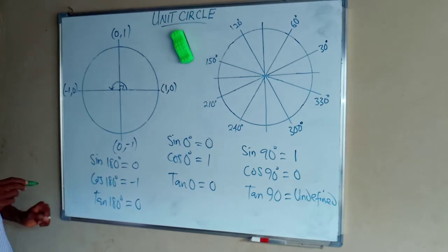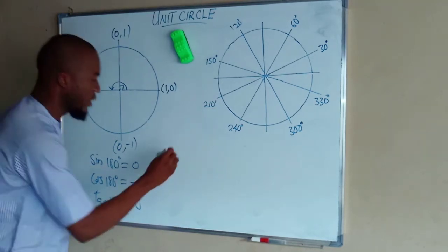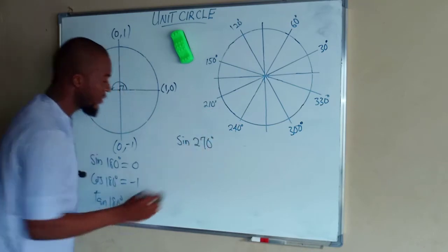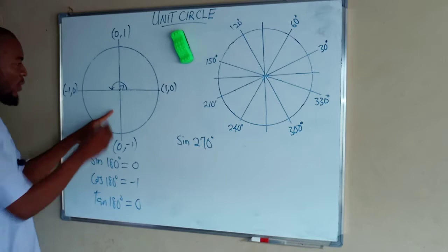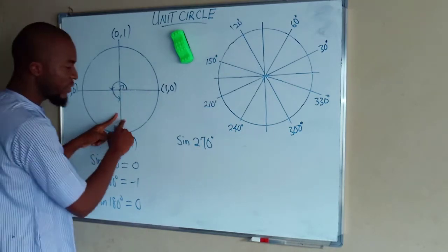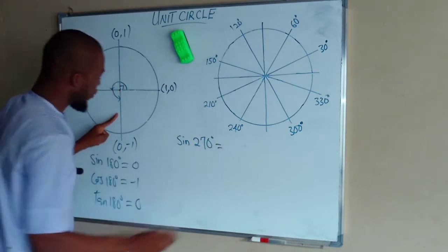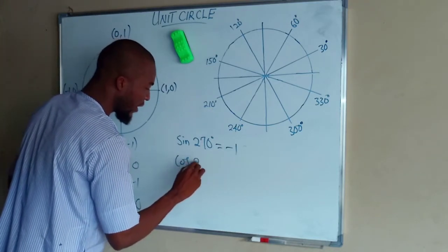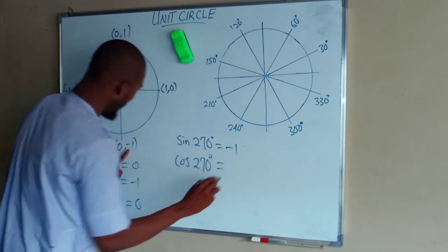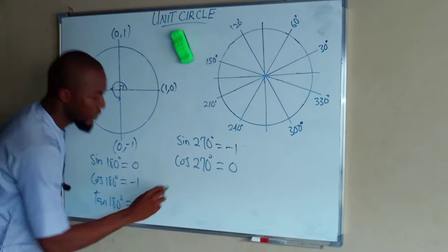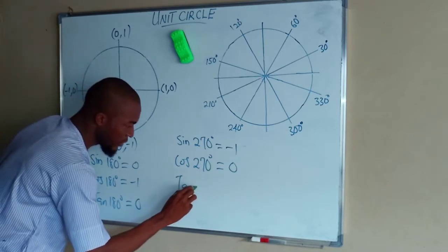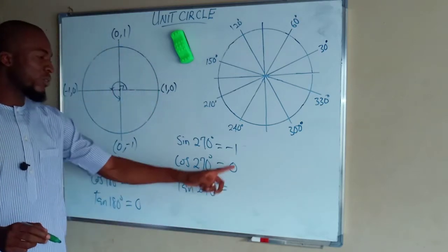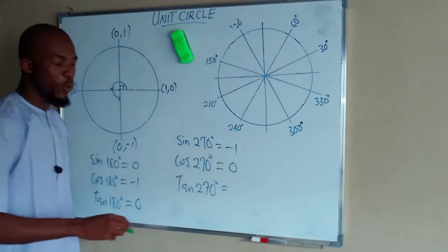Now let us move on to angle 270°. Sine 270° is on the negative y-plane; from the origin to this plane is 270°. This equals the corresponding value of y, which is negative 1. The cos of 270° is equal to 0. For tan 270°, sin divided by cos gives negative 1 divided by 0, which is also undefined.